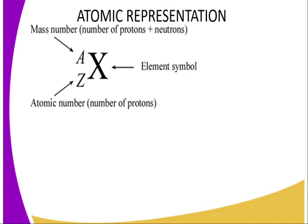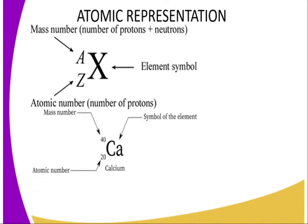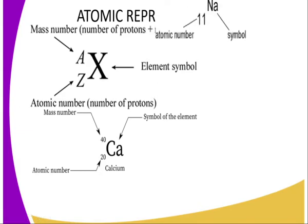For example, calcium has atomic number 20. You can see where the 20 is placed. It has a mass number of 40 — that is 20 protons plus 20 neutrons — and its symbol is Ca. Remember, we must always use the correct symbol.